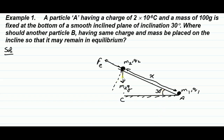This inclination is 30 degrees. Resolving M2G into its components — one perpendicular to the plane and the other component along the plane. The component perpendicular to the plane is M2G cos 30°, and the component along the plane is M2G sin 30°.